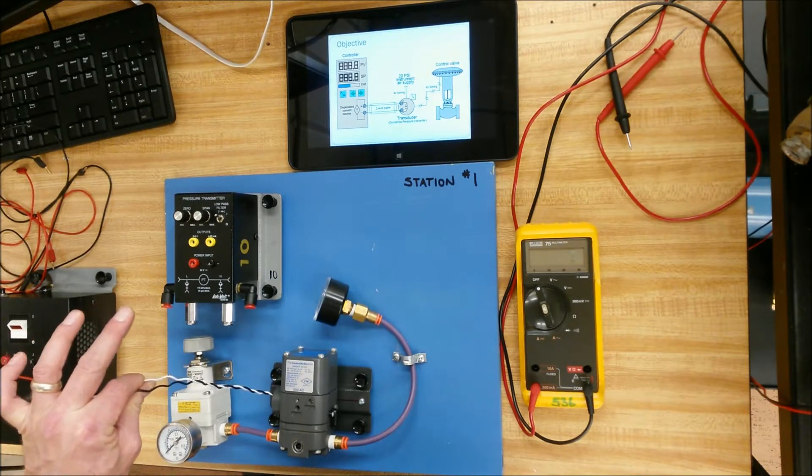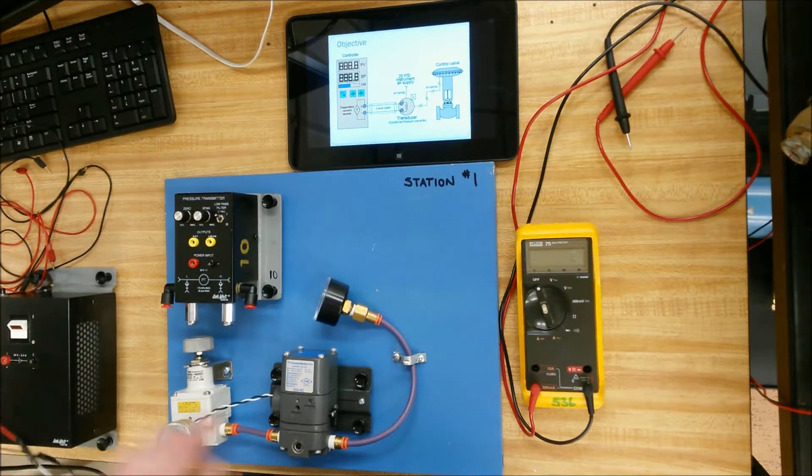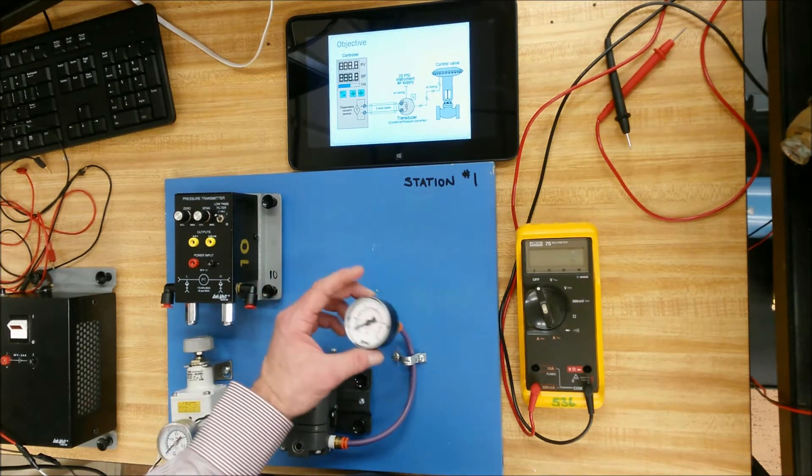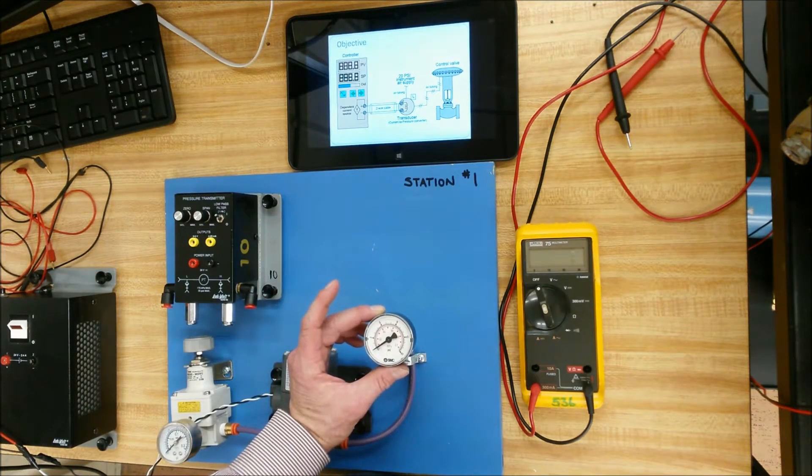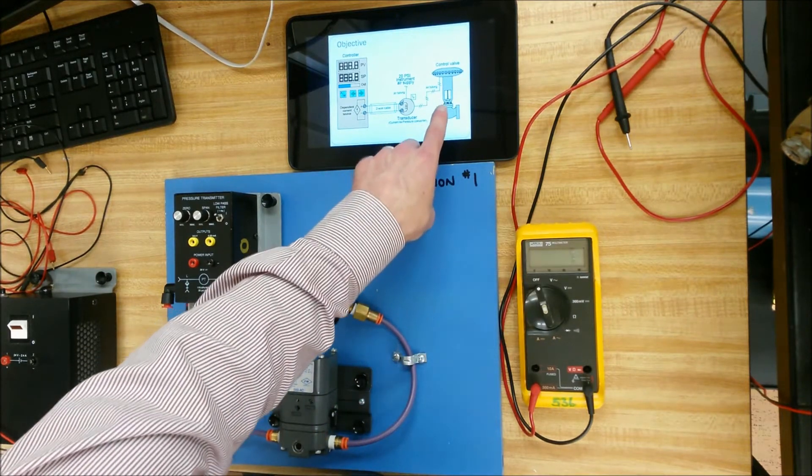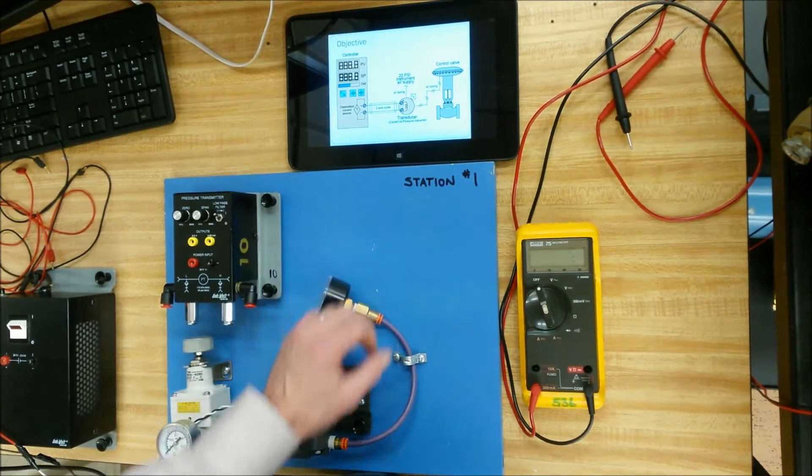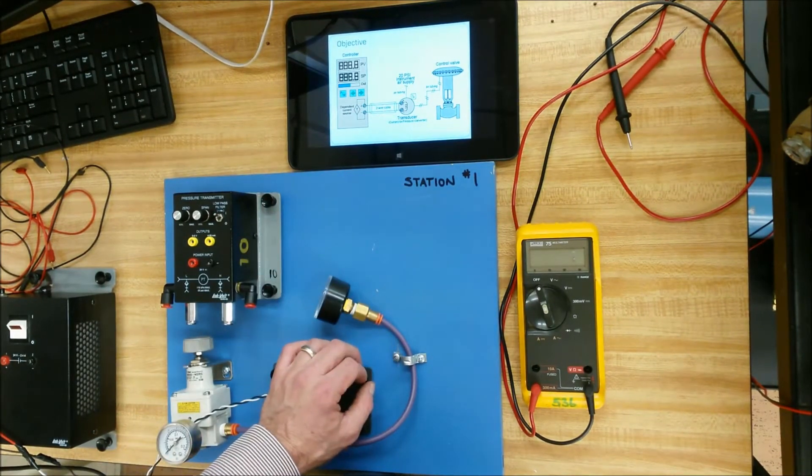We're going to have 4 to 20 milliamps flowing on here. The coil is going to take the 4 to 20 milliamps and change it to 3 to 15 PSI. That 3 to 15 PSI would be going to a large control valve, and that would push down on the spring and open and close the valve with just a small amount of pressure.